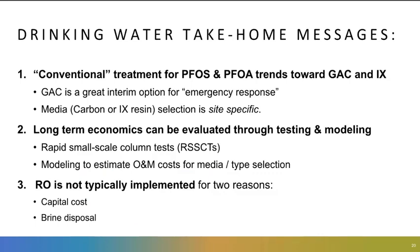The drinking water take-home messages: conventional treatment for PFOS and PFOA trends towards GAC and ion exchange. GAC is a great interim option, especially for an emergency response, because you can get those vessels out there in a hurry — packaged systems from various suppliers, just put out on a skid, with a functioning system within a couple of months. If you want to go ion exchange, it's a little more involved, but you can probably get better long-term performance out of an ion exchange resin, depending on your water. The long-term economics really should be evaluated through testing and modeling using rapid small-scale column tests, and then using those data to model and estimate operation and maintenance costs for the media.